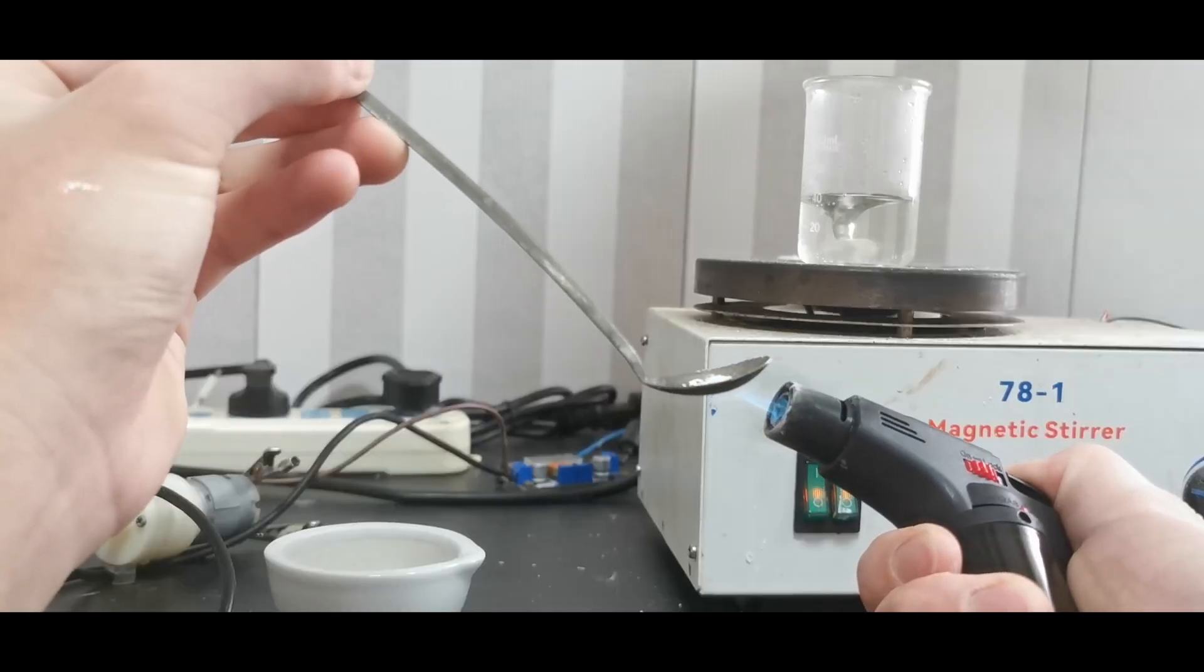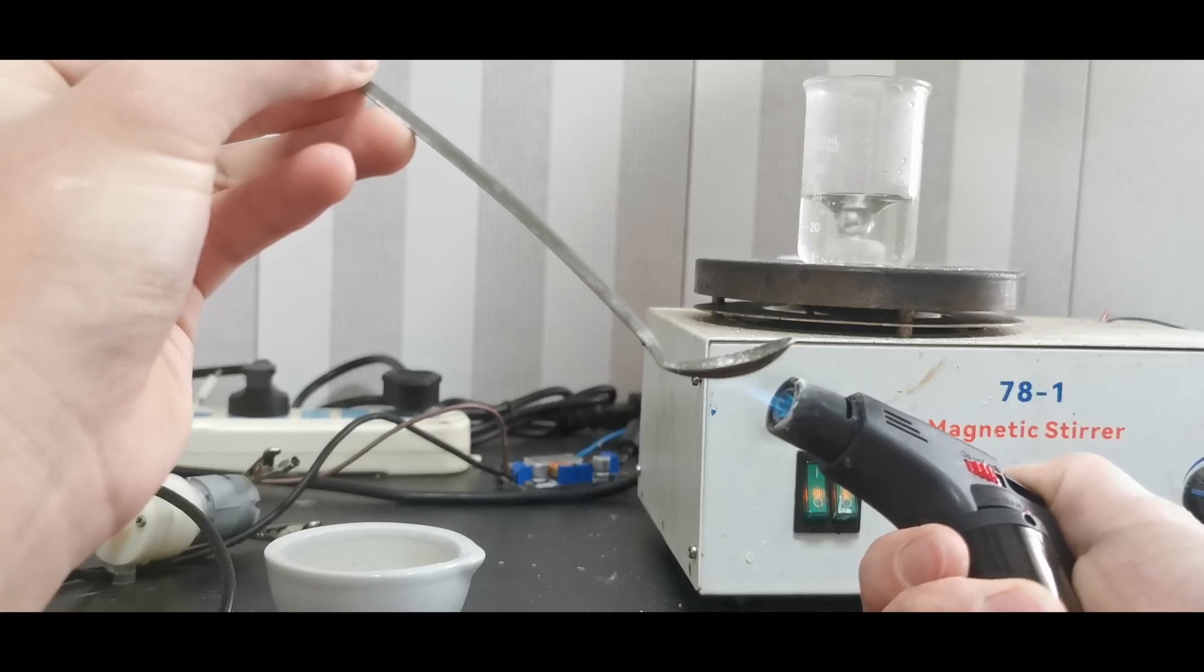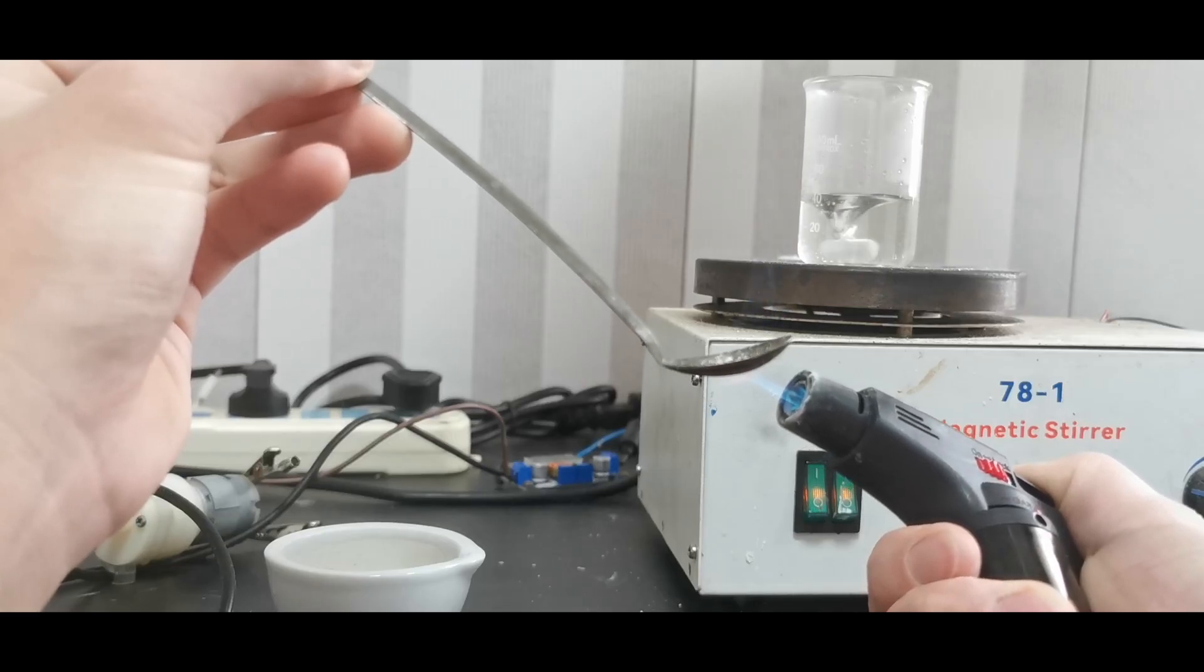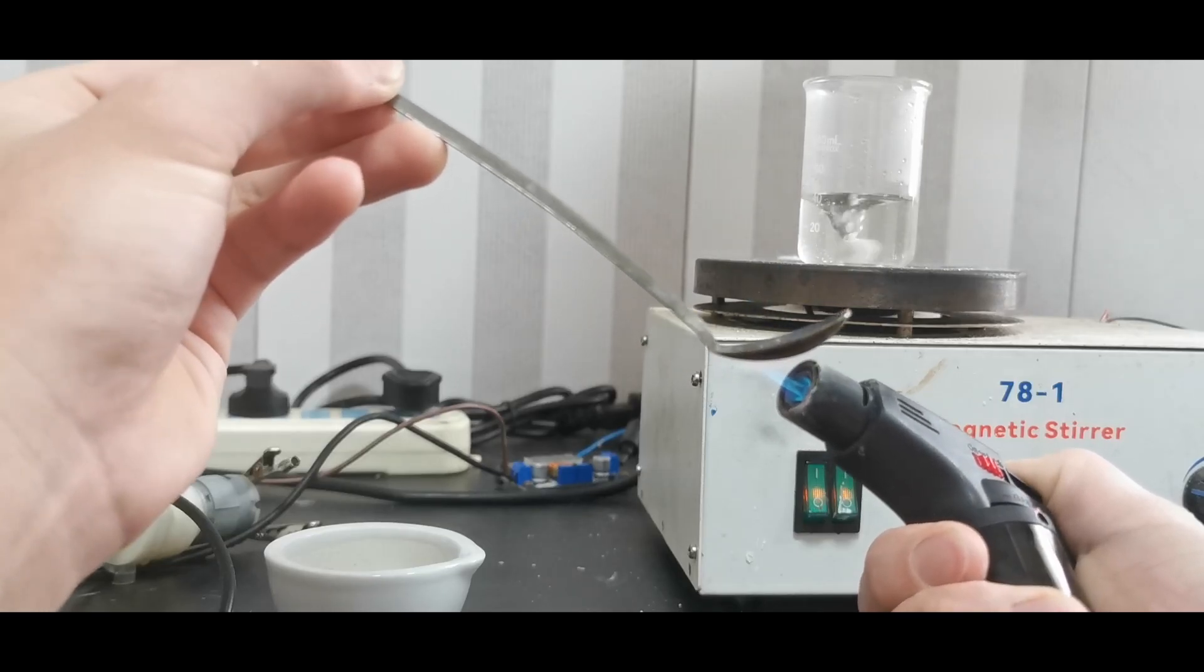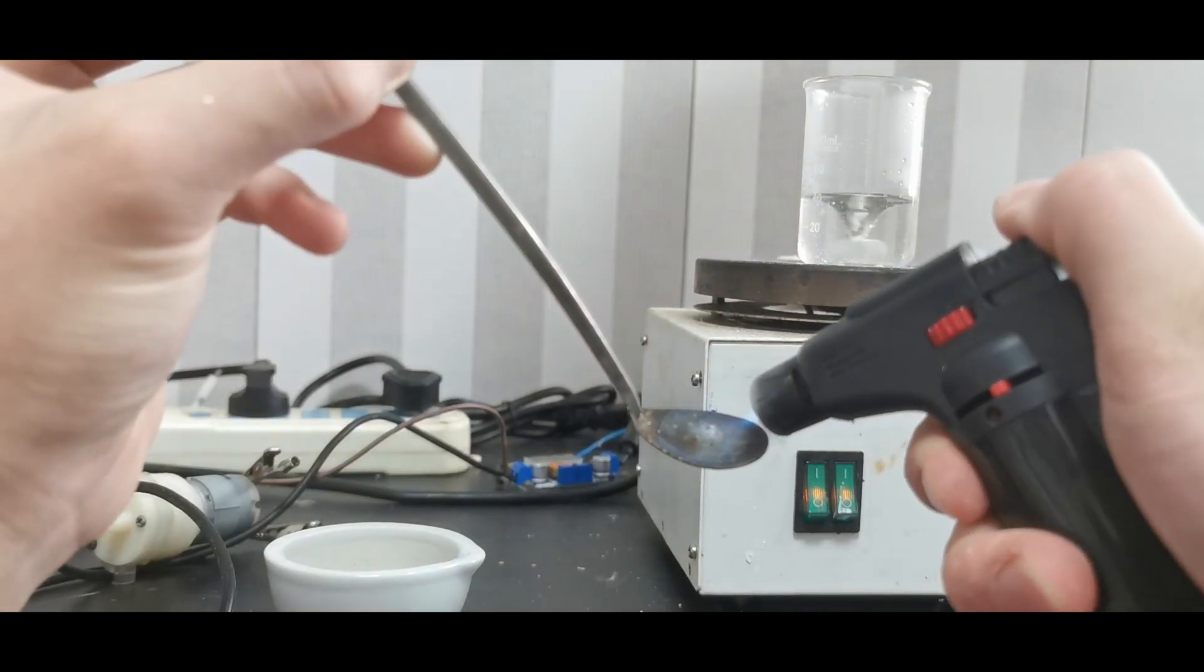I tested the purity of the perchlorate by taking a small amount of crystals and heating it carefully with a blowtorch. Everything evaporated away, and only a tiny amount of white salt remained on the spatula, which tells me that the ammonium perchlorate is at least free from sodium.